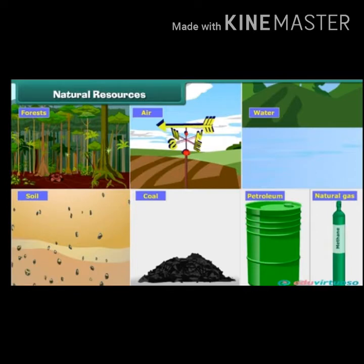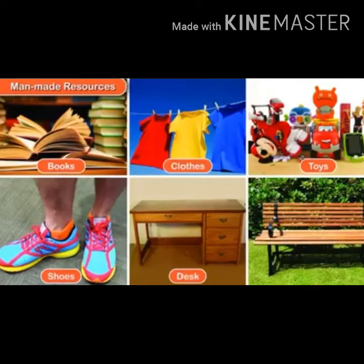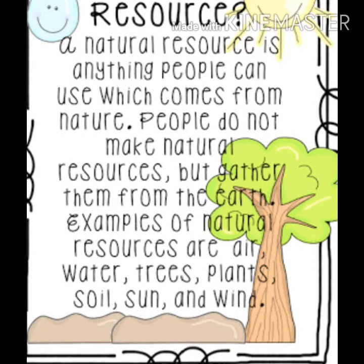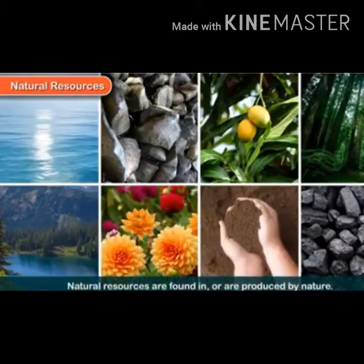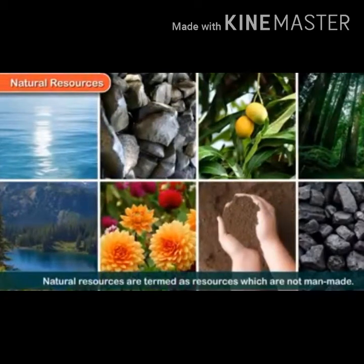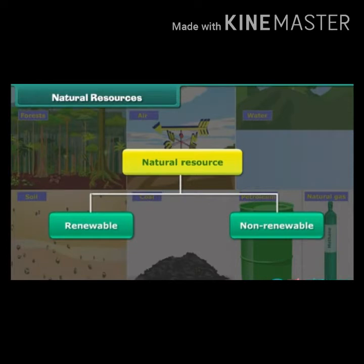Natural resources are provided by nature, while man-made resources are made by human beings. A natural resource is anything people can use which comes from nature. People do not make natural resources but gather them from the earth, like water, air, trees, plants, soil, sun and so on. So, natural resources are found in nature, which means these natural resources are not man-made. The natural resources are further divided into renewable and non-renewable resources.